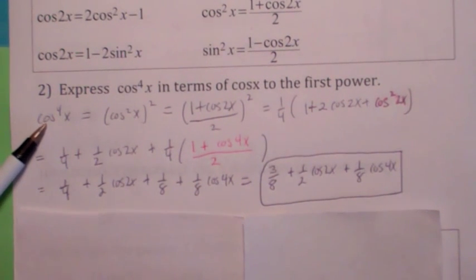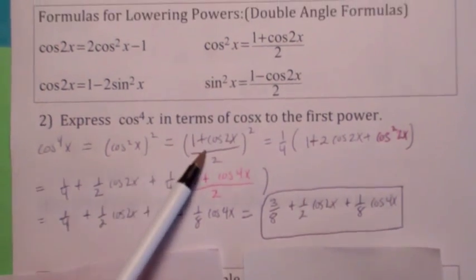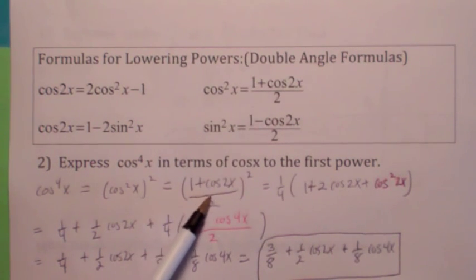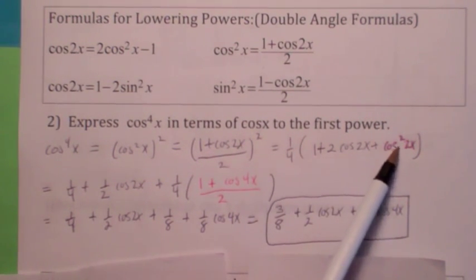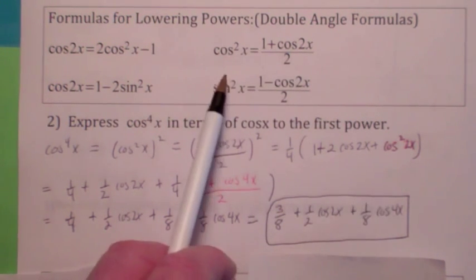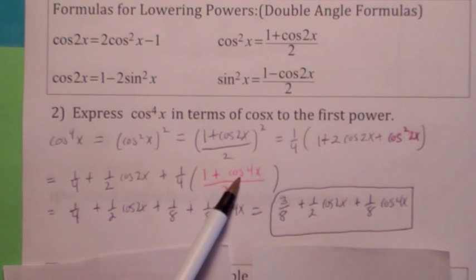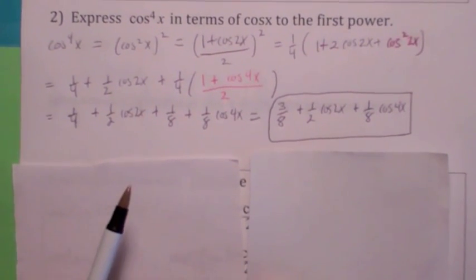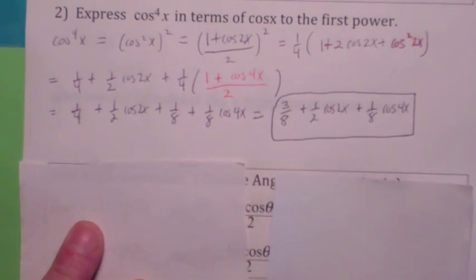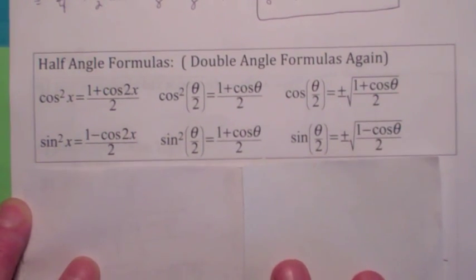For example, we're going to express cosine to the fourth in terms of cosine to the first power. Write it as cosine squared, squared, then apply the power reduction formula to the cosine squared on the inside. Multiply it out — when you square it you get that expression — then you also need to eliminate the cosine squared of 2x by applying the power reduction formula again: cosine squared of 2x becomes 1 plus cosine 4x over 2. When you carefully multiply and simplify everything, you get three eighths plus one half cosine 2x plus one eighth cosine 4x. The power reduction formulas are really just the double angle formulas solved for different expressions.